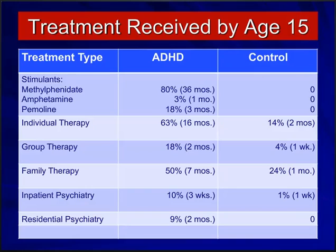Most of the children had received medication during childhood. By age 15, more than 83% had received one of the two stimulants, and at least 18% had received the stimulant Pemoline, which is no longer on the market. On average, they were on medication for only approximately three years. Many had received various forms of therapies — particularly individual therapy, family therapy, or group parent training — and a small percentage had received group therapy or inpatient or residential treatment.